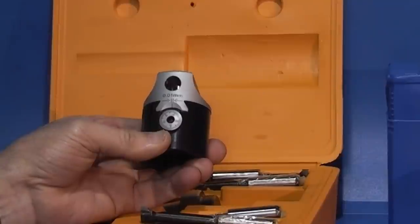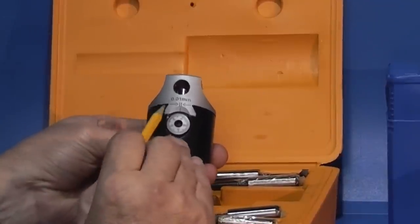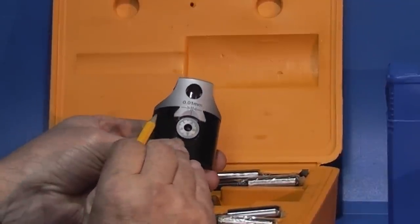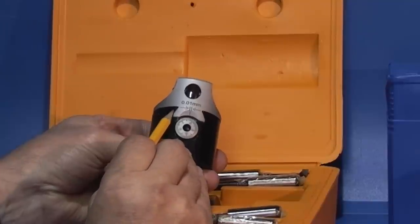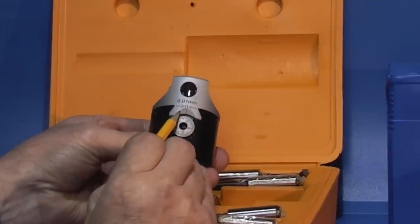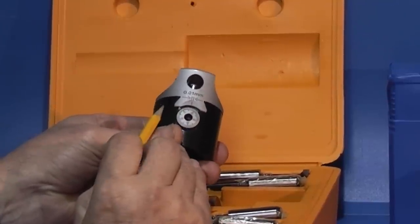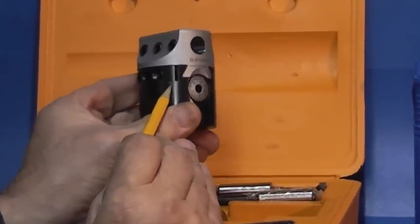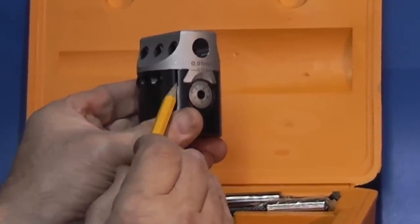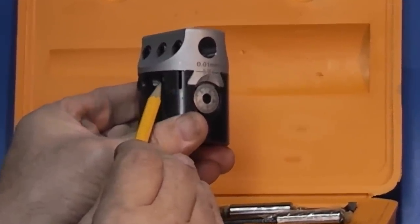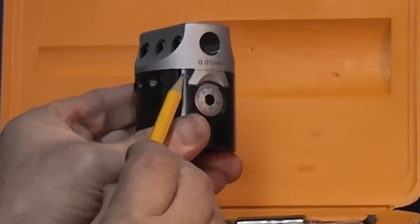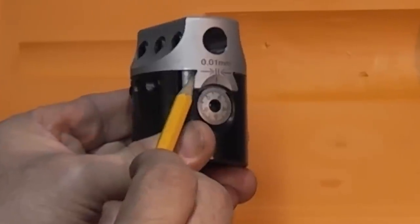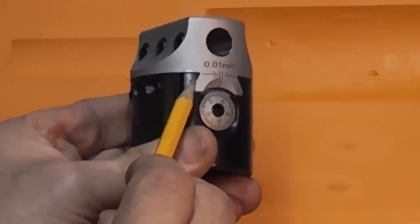I think they've done some value engineering on this because traditionally you would have had a gib strip in here. These three screws would have tightened up onto the gib strip and locked the head. So what they've done on here is they've put a slot down the side so the grub screws push against this black part here and this pushes over to lock the head.